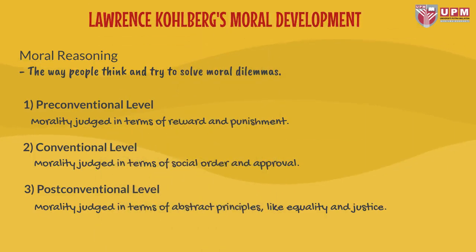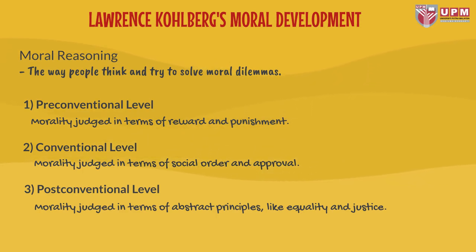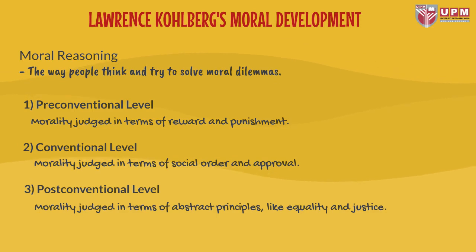Lawrence Kohlberg's moral development. Moral reasoning is the way people think and try to solve moral dilemmas. First, pre-conventional level — morality is judged in terms of reward and punishment. Second, conventional level — morality is judged in terms of social order and approval. Third, post-conventional level — morality is judged in terms of abstract principles like equality and justice.